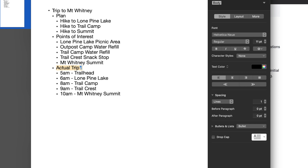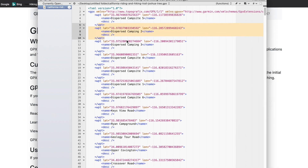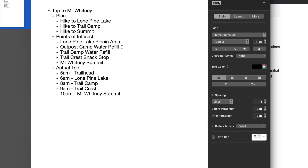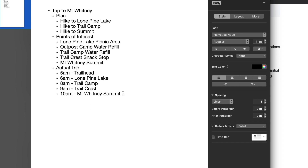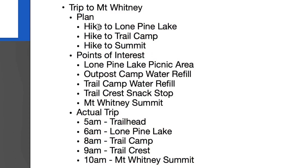Physically, a GPX file is just a text file and you can open it with any text editor. Before we dive into the computer code, I want to show a conceptual equivalent in a word processor document. You can think of it as a bulleted list within a document. Here I have a trip to Mount Whitney — my plan, which is the route, is the hike to three places. Some points of interest along the way are the waypoints. My actual trip that was recorded — 5 a.m. at the trail, 6 at Lone Pine — this is the track.